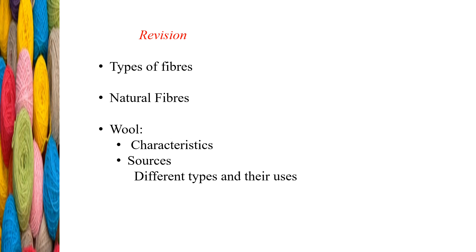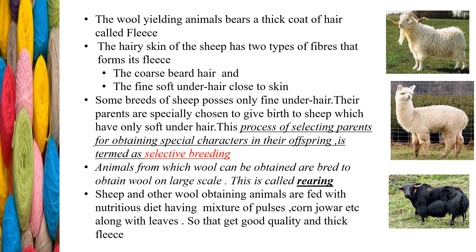Wool-yielding animals bear a thick coat of hair called fleece. Hair in mammals is the characteristic thread-like outgrowth of the outer layer of the skin that forms the animal's coat or fur. Fleece is nothing but the woolly covering of a sheep or a goat. This fleece is of two types: coarse beard hair and fine soft under hair, which is very close to the skin.